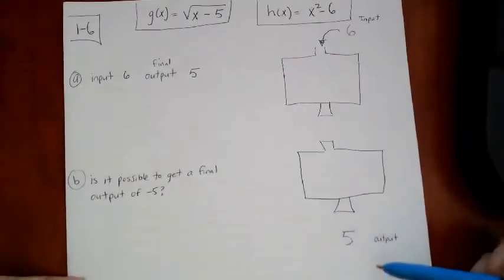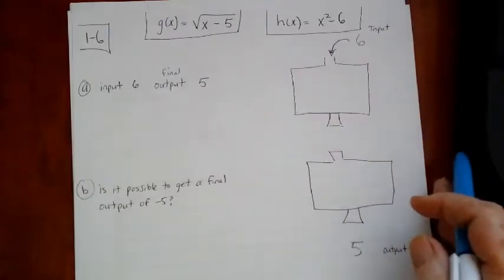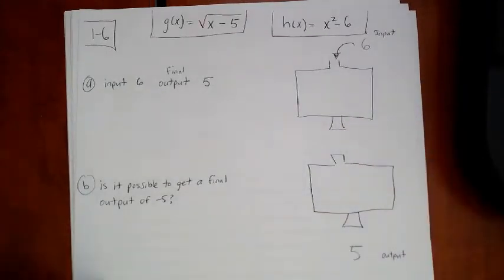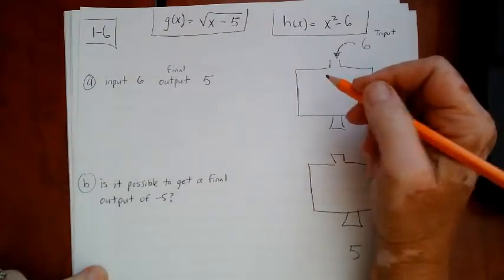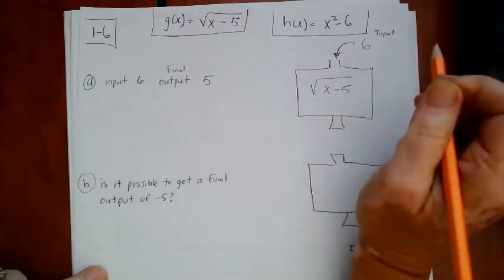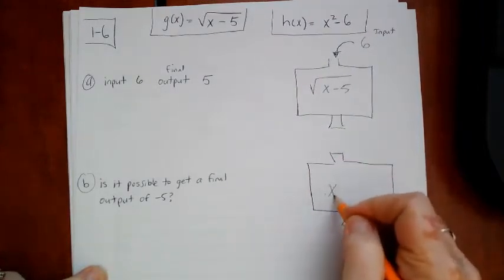And I want to put one of these in the top machine and one of these in the bottom machine and plug the numbers in and see if I can come out with a 5. So at first I'm just going to randomly pick one to put on the top. I'll just put g of x on the top. g of x is square root of x minus 5. So if I put g of x on the top, I've got to put h of x on the bottom.